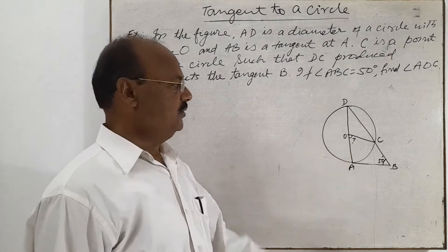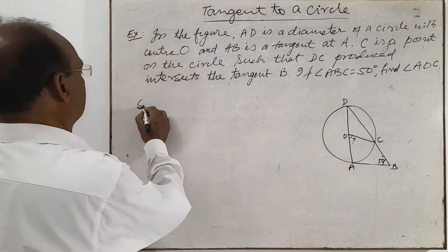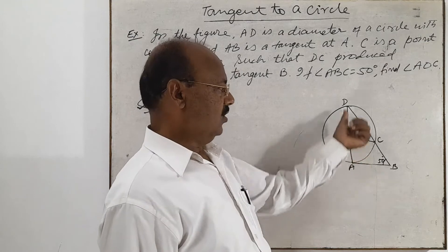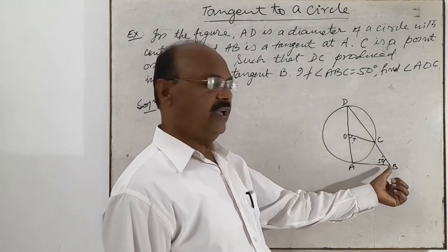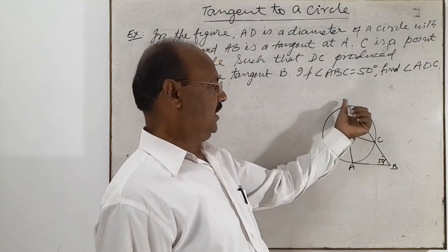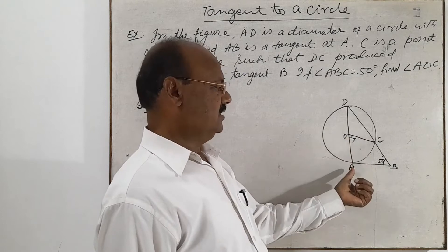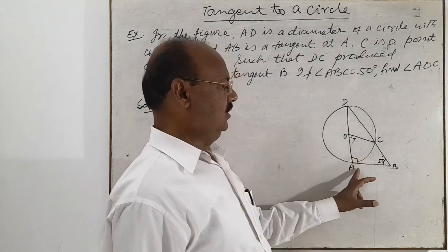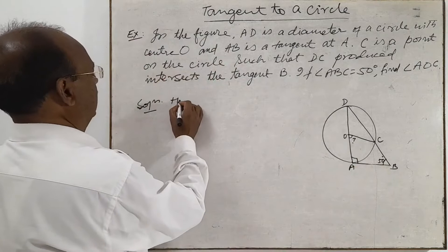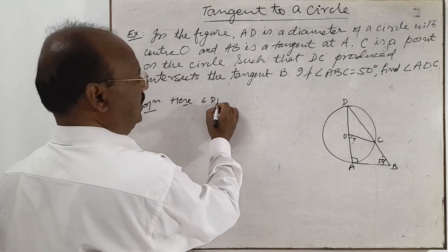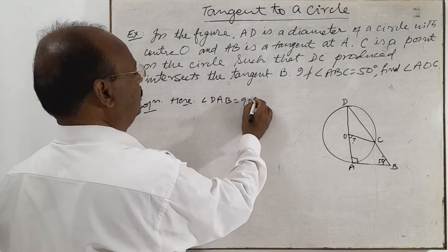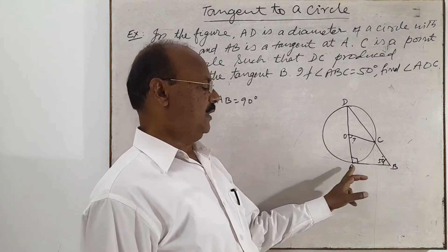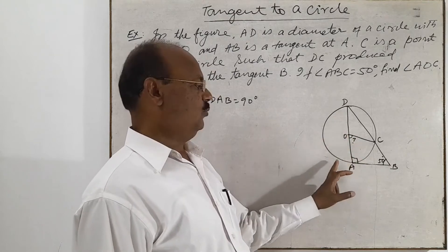The solution is very simple. We know a property that the radius or diameter is always perpendicular to the tangent at the point of contact. So here OA is a radius, meaning angle DAB equals 90 degrees, because the tangent is always perpendicular to the radius at the point of contact.